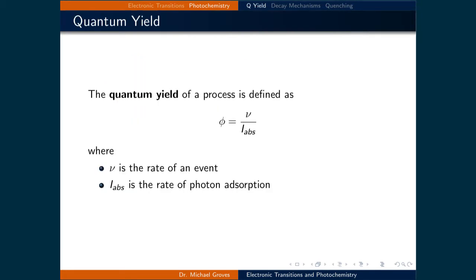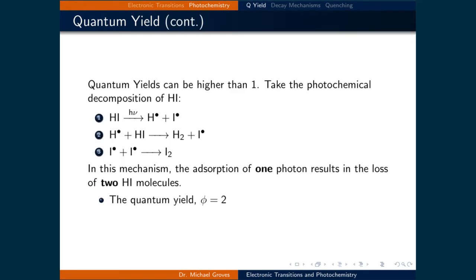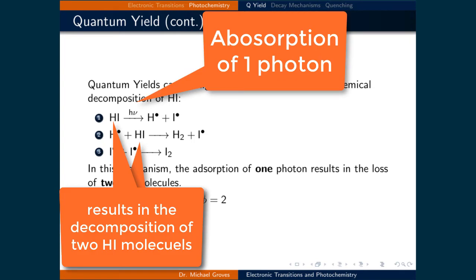When talking about any process that absorbs light to drive a reaction, its efficiency can be quantified by its quantum yield. A process's quantum yield is the rate of an event occurring divided by the rate of photon absorption. At first glance, it would be logical to think that the best quantum yield possible would be equal to 1. However, it is possible for the rate of an event to occur to be higher than the rate of photon absorption. For example, the photochemical decomposition of HI has a quantum yield of 2. This is because the absorption of one photon results in the decomposition of two HI molecules.